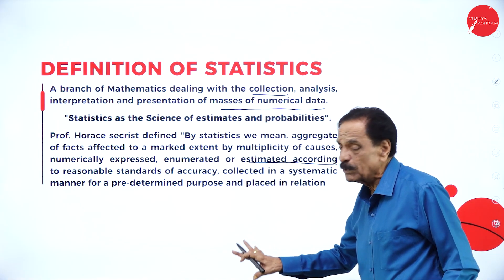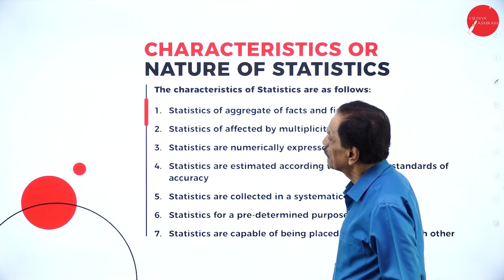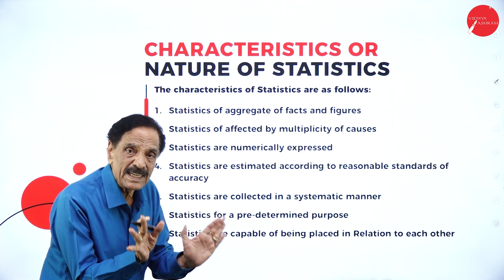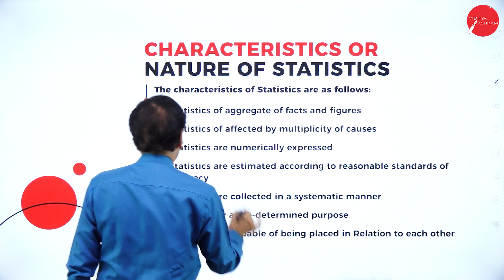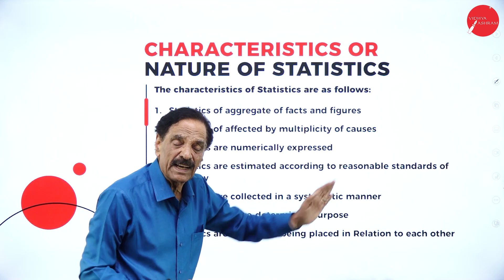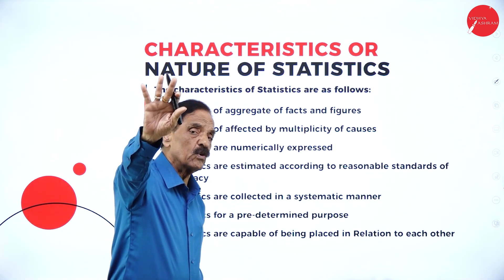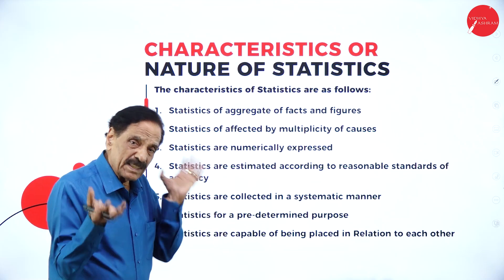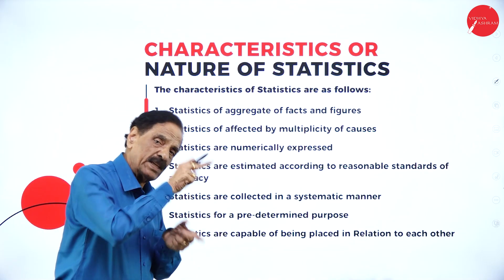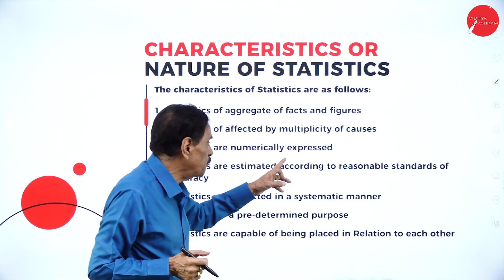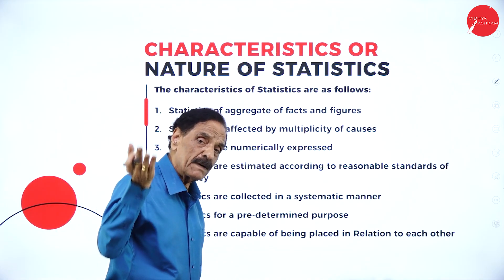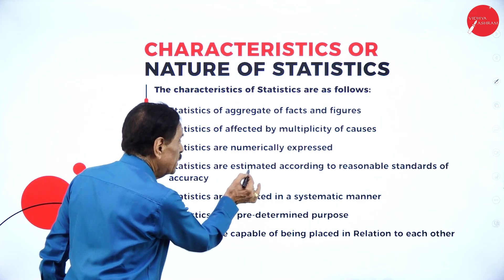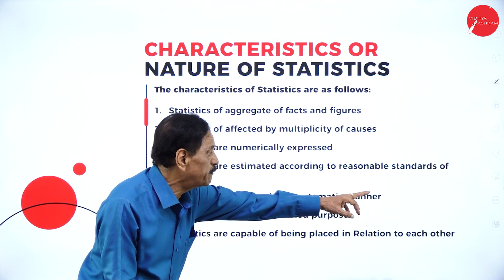The nature of statistics includes several characteristics. First, statistics are aggregates of facts and figures — it is the total of whatever facts and figures are available. Second, statistics are affected by a multiplicity of causes, meaning the numerical numbers change due to various causes. Third, statistics are numerically expressed — all data are represented in numbers.